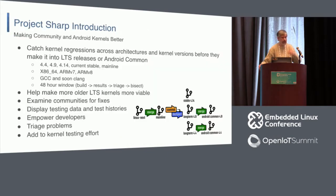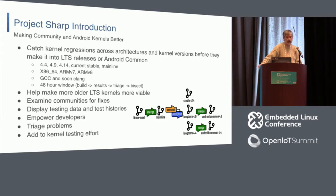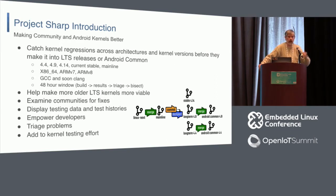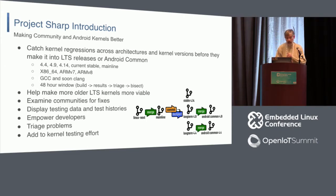So, let's get into the point of the project — Project Sharp and LKFT. The goal of these two activities together is to catch kernel regressions. What we want to do is across the architectures using LTS kernels and their direct downstreams like the Android common kernel — essentially make a promise that we're not breaking the kernel, not introducing any regressions, and that the kernel is just as good as the prior LTS release. This goes across 4.4, 4.9, 4.14, current stable, and mainline.